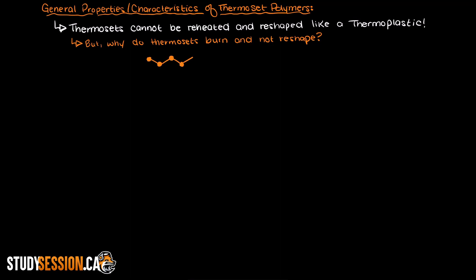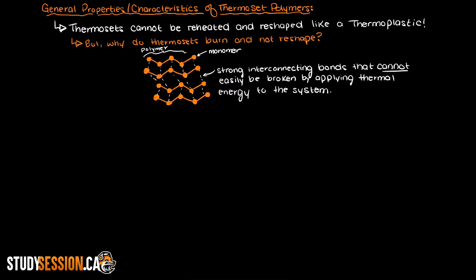Well, thermoset polymers have what is called cross-linking. This occurs where the individual polymers connect to one another with strong bonds and they cannot readily be broken by simply applying heat like the weak bonds between thermoplastic polymers can. So it basically means that the thermoset polymers are locked in place and can just burn.